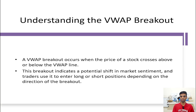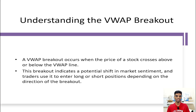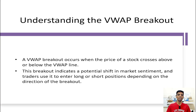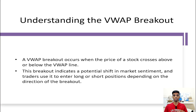So now let's understand what the VWAP breakout is. When a breakout occurs and the price goes above the VWAP line, we buy. And if the price goes below the VWAP line, we sell the stock. This breakout indicates a potential shift in market sentiment, and traders either take a long trade or a short trade depending on the direction of the breakout. Even though this strategy is really good, always try to use multiple indicators — at least two together — to get confirmation. You can use moving average or RSI alongside this.